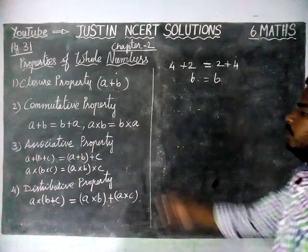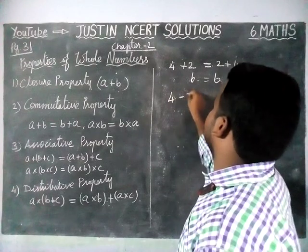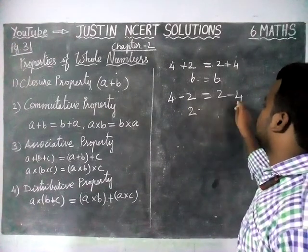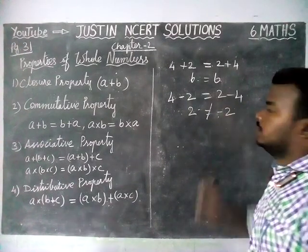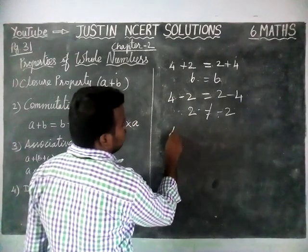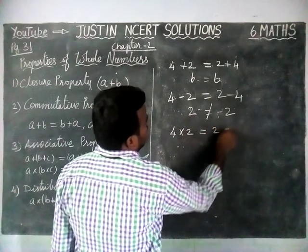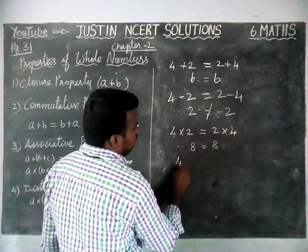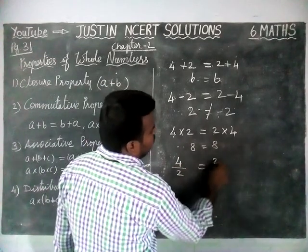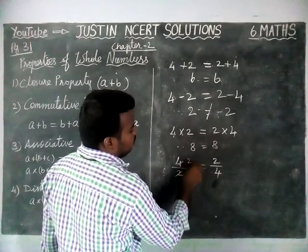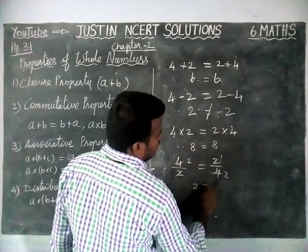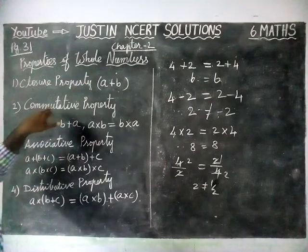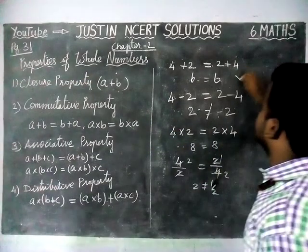Both sides are whole numbers. Now we are going to check for subtraction. 4 minus 2 equals 2, but 2 minus 4 equals minus 2. These are not equal. For multiplication, 4 into 2 is equal to 2 into 4 — both give 8, which is a whole number. For division, 4 divided by 2 equals 2, but 2 divided by 4 equals 1 by 2. So 2 is not equal to 1 by 2. Therefore, whole numbers are commutative under addition and multiplication.